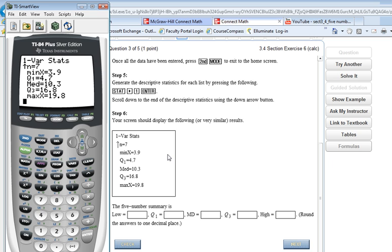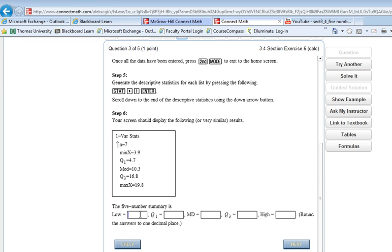So real quick, if I was to think about having a box plot here, I could put those numbers in. I'm going to go ahead and do that. My min is 3.9. Sorry about that, I had to write those numbers down. So my minimum, or my low value, is 3.9. My quartile one is 4.7. My median, my middle number, is 10.3.